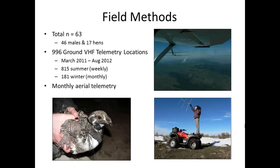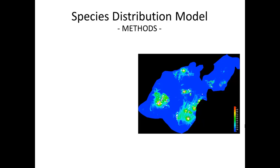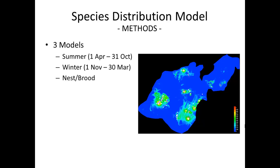We radio-collared a number of sage-grouse and tracked them over two summer seasons getting weekly locations and one winter season getting monthly locations. We also used aerial telemetry, but we did not use aerial telemetry locations in our analysis — we really used it to help find missing birds and search for birds that might have gone outside of the study area. We used the program Maximum Entropy to create three models per season and also for nest and brood. Seasonal cutoff dates were guided by other literature for other populations.